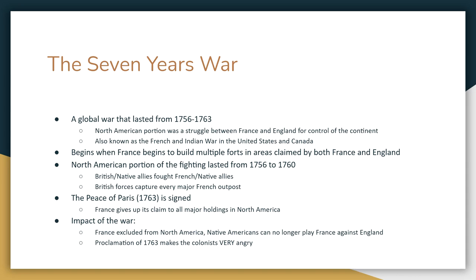The Seven Years War is something that's not talked about a whole lot, but it was actually a global war. It started here in what is today the United States, but in reality there was fighting in Europe, in Africa, in Asia, and in India too. It actually lasts seven years, 1756 to 1763.